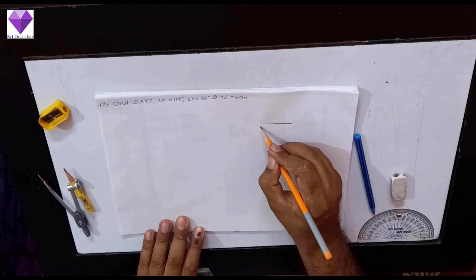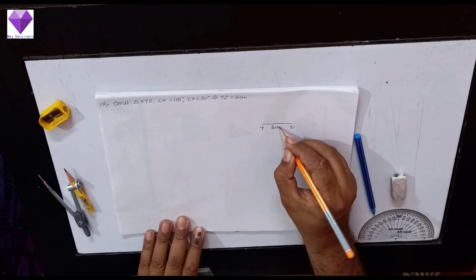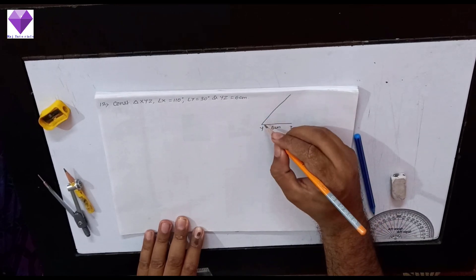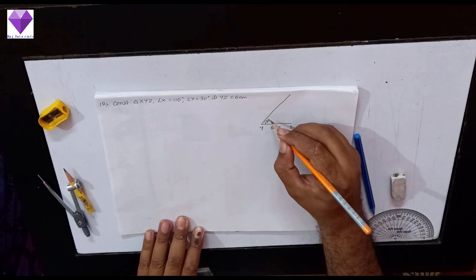So first I will draw YZ equal to 6 cm in the rough sketch. Y equals 30 degrees, so this is 30 degrees.